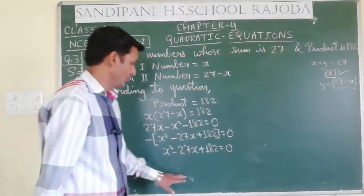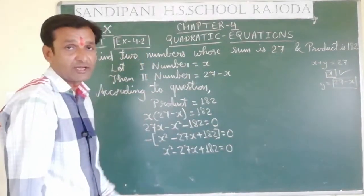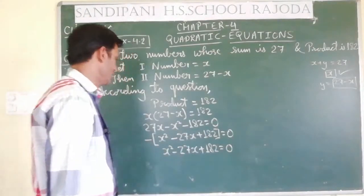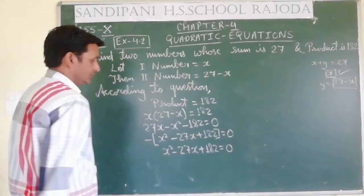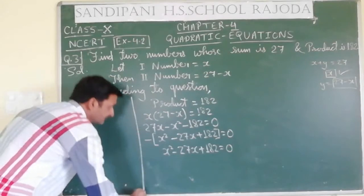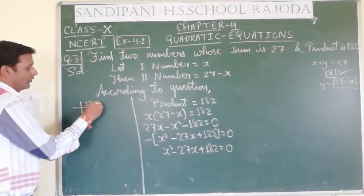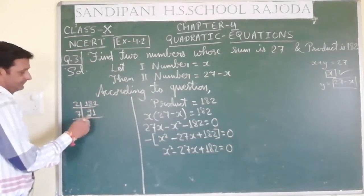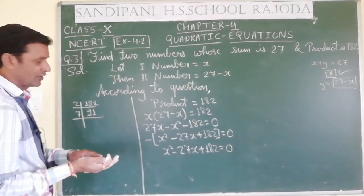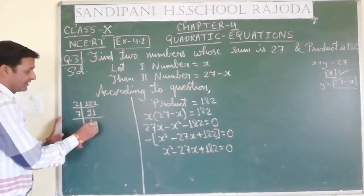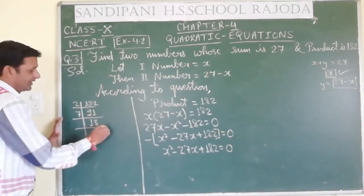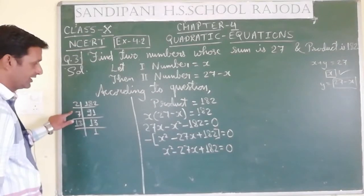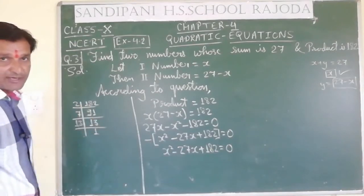Now what do we want to do here? We can solve it by the formula method, by factorization method, or by completing the square. Let us proceed with the factorization method. We want to factorize 182. It is not divisible by 3 or 5. Applying 7: 7 ones are 7, and 7 thirteens are 91, giving 7 and 13 as factors. And 14 plus 13 is 27.